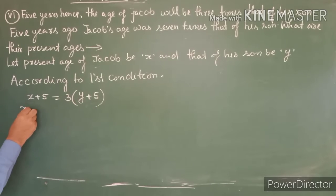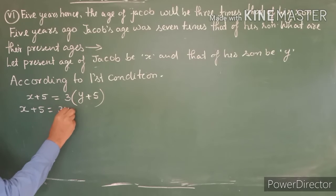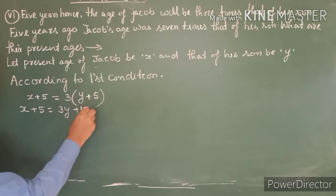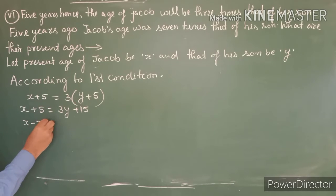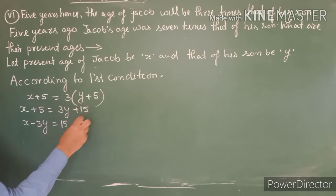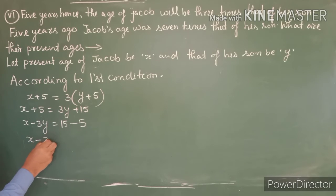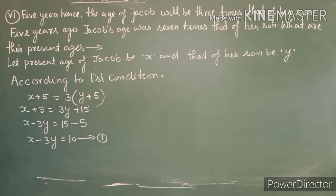Now let's reform it. x plus 5 equals 3y plus 15. Bringing 3y to the left: x minus 3y equals 15 minus 5, which gives x minus 3y equals 10. This is Equation number 1.